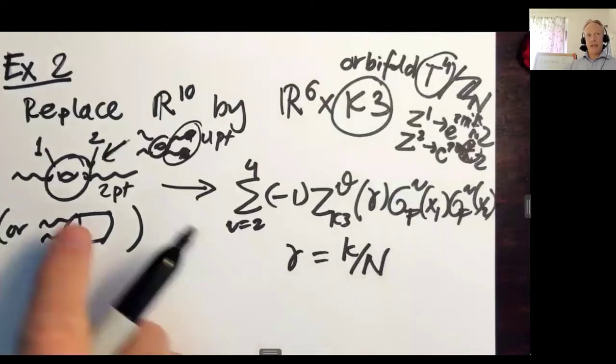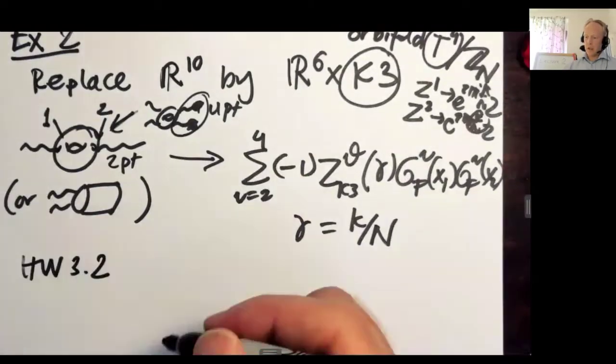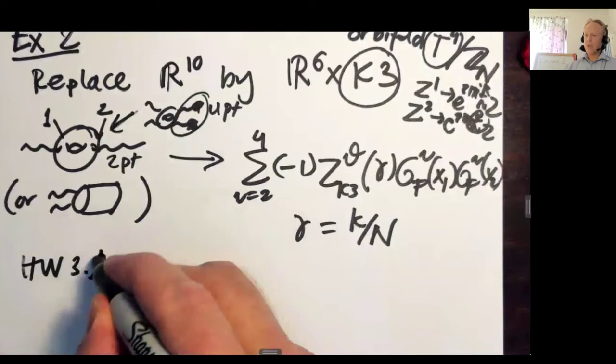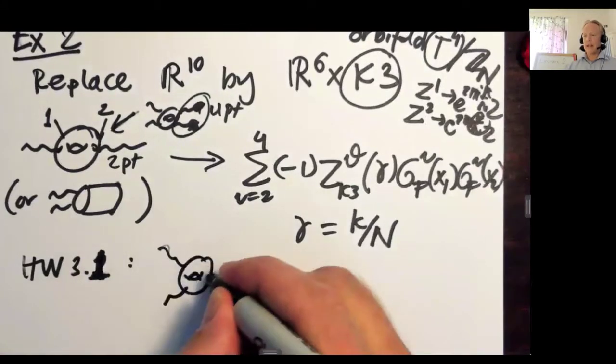But this is supposed to be a two-point function. It's a two-point function on this R6 times K3 space. In homework problem 3.1, I would like you to compute a three-point function at one loop in an orbifold.